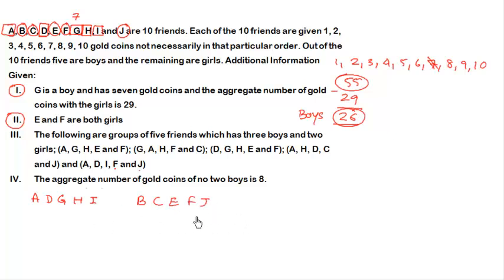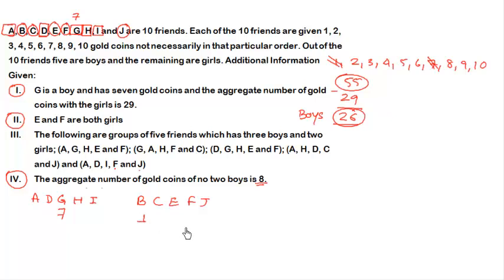The fourth condition states that the aggregate number of gold coins of no two boys is 8. Since G is a boy carrying 7 coins, no boy can carry 1 coin — otherwise two boys would sum to 8. So coin 1 goes to the girls. The boys' total is 26 and G has 7, so the remaining four boys must have coins summing to 19, chosen from {2, 3, 4, 5, 6, 8, 9, 10}.